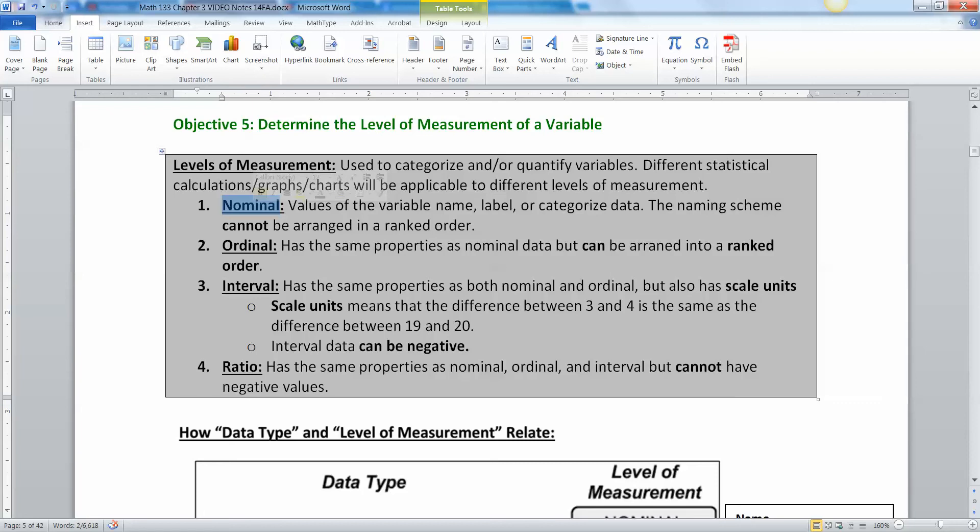You can arrange it in alphabetical order, that's cool. Zip codes would fall into this too. You can arrange in numeric order, but again, it's not ranked. It's not like people that have a zip code of 49201 are better than people that have a zip code of 49202. Now ordinal is when you can arrange them and label them, but you can put them in a ranked order.